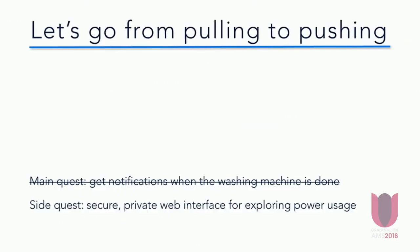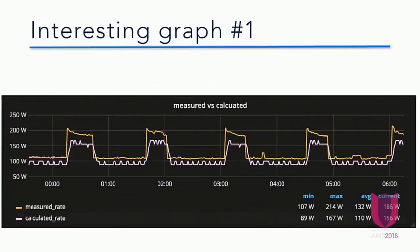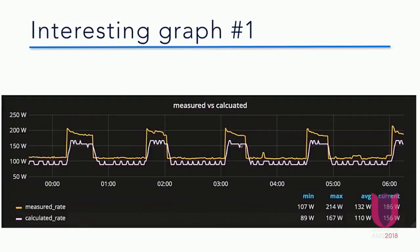I do have some nice graphs of my power usage and some insights into how it's all working. The smart meter exposes the current draw and also the total meter reading. With Prometheus it's possible to do a derivative of your graph, so this is the comparison between what the meter is reporting and what the current draw is. They do align, but there's a small difference — which makes sense because the smart meter only reports its values every 20 seconds.